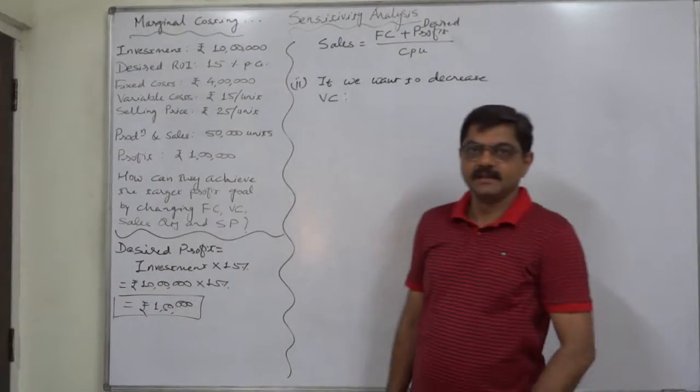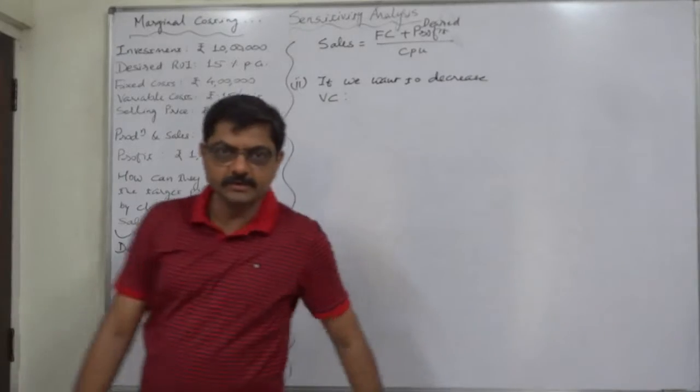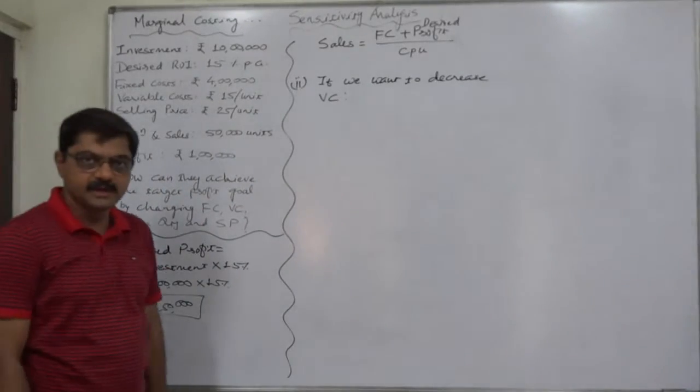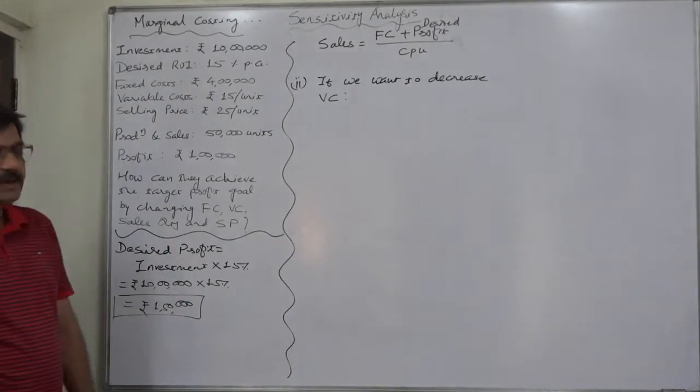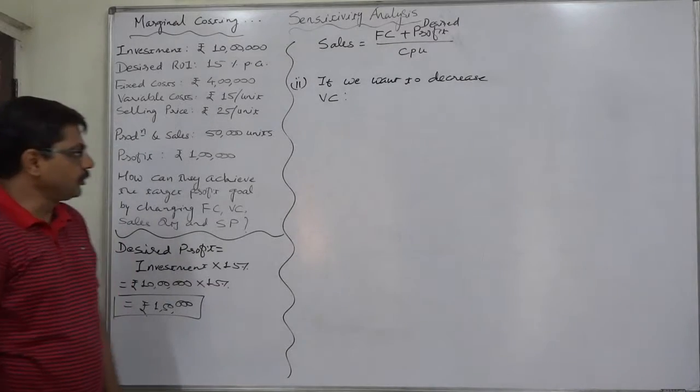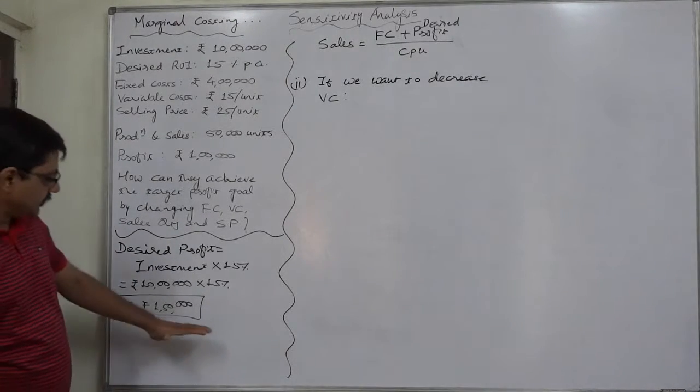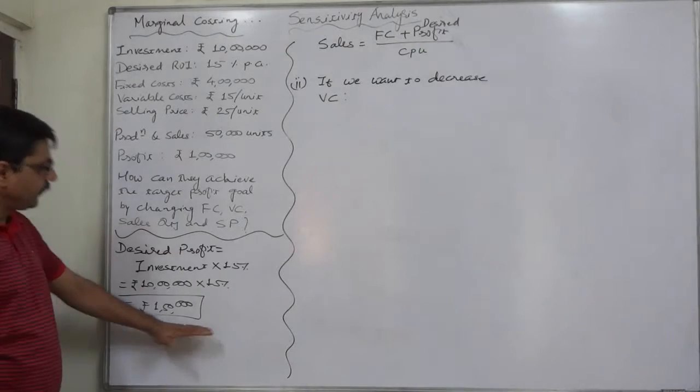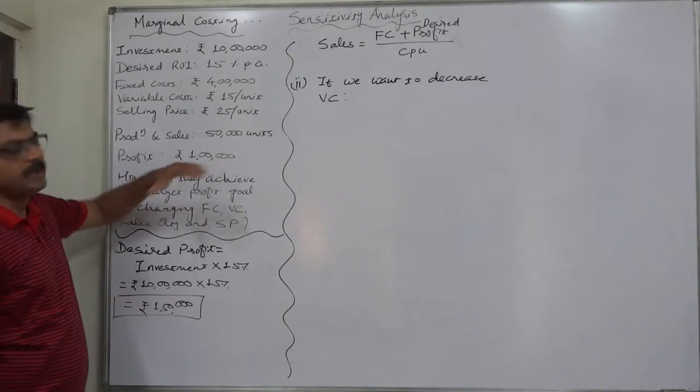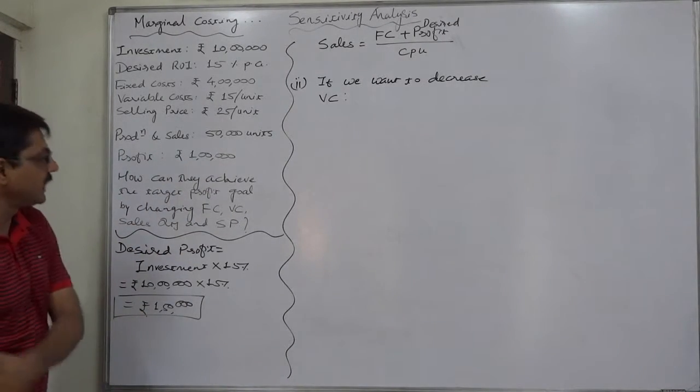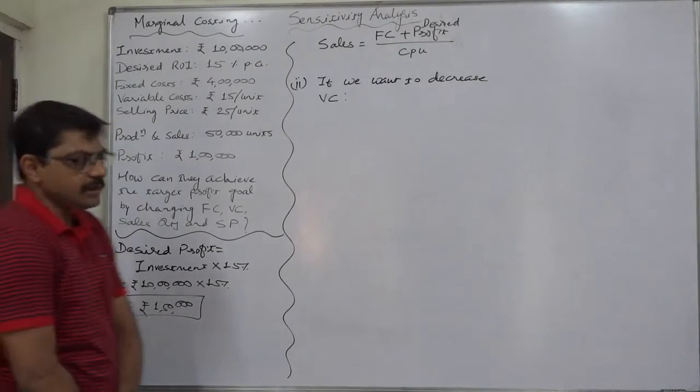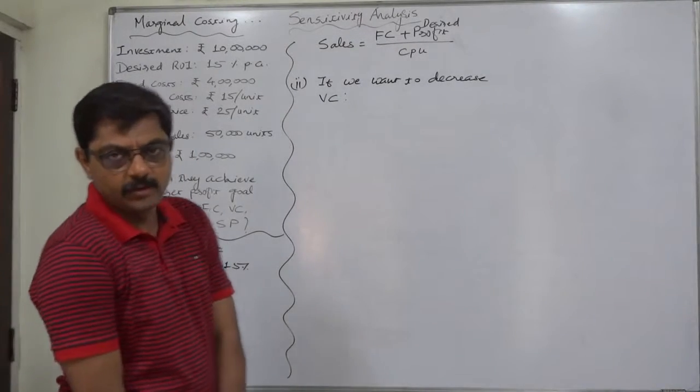Hello and welcome friends. In marginal costing we have started solving a problem of sensitivity analysis. In the previous lecture, we discussed what should be the revised fixed cost to achieve the desired profit of ₹1,50,000, which was only ₹1,00,000 during the last year. Now another alternative with the management of the firm is to reduce the variable cost.